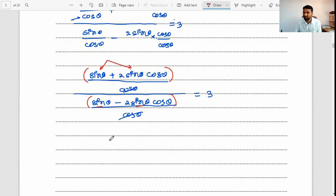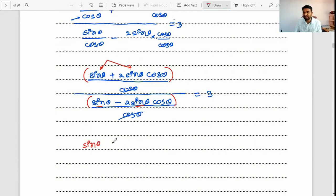Take sin θ out, so you will be having (1 + 2 cos θ)/(sin θ(1 - 2 cos θ)) = 3. Sin θ sin θ get canceled out. Take this whole part to the right hand side: 1 + 2 cos θ is equal to 3(1 - 2 cos θ).